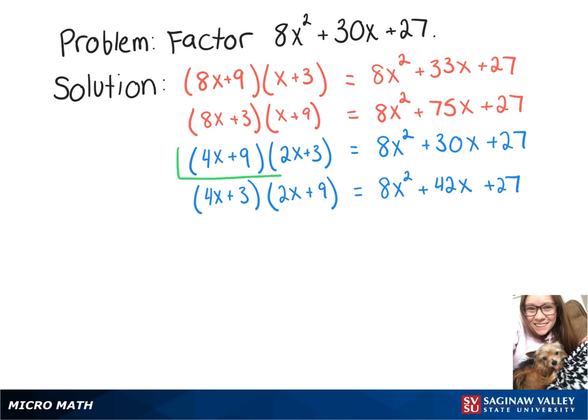So when we factor 8x squared plus 30x plus 27, we're going to get 4x plus 9 times 2x plus 3.